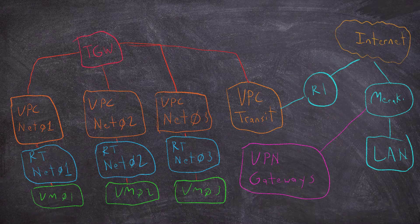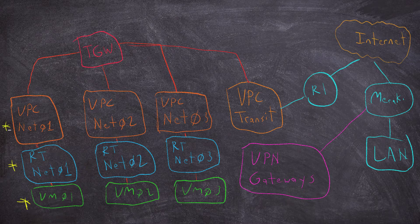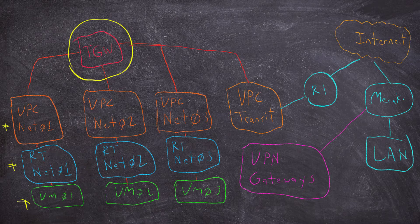The different components we have are: virtual machines which will basically be Linux hosts, and we're going to have to create our own route tables for each one of the networks and tie that over to a VPC to hold all our networking. Then we are going to wrap all these together with what's called a Transit Gateway, which is going to handle all our routing.